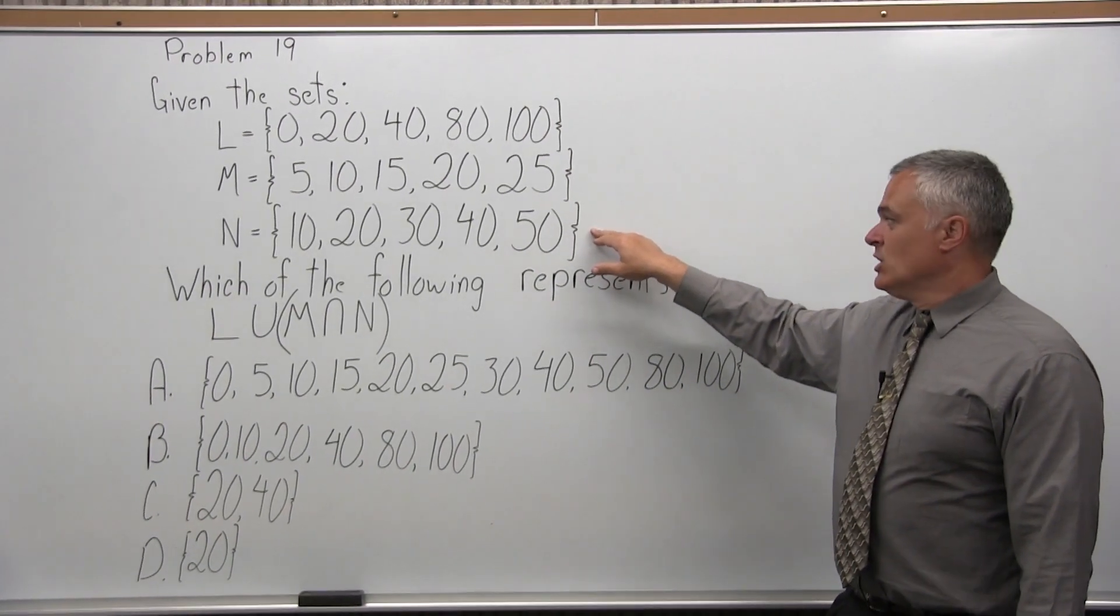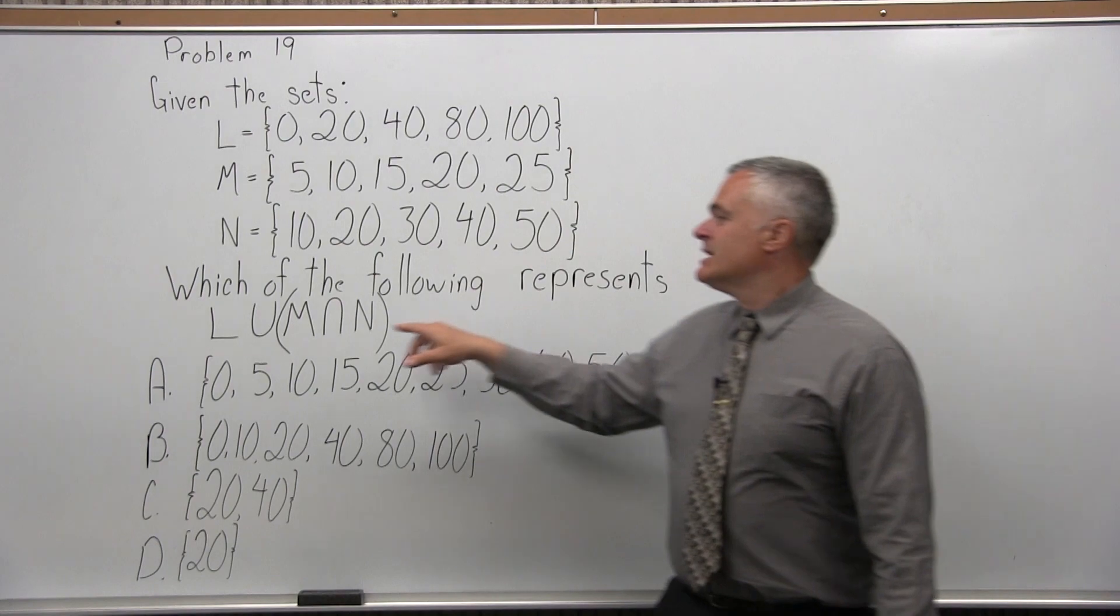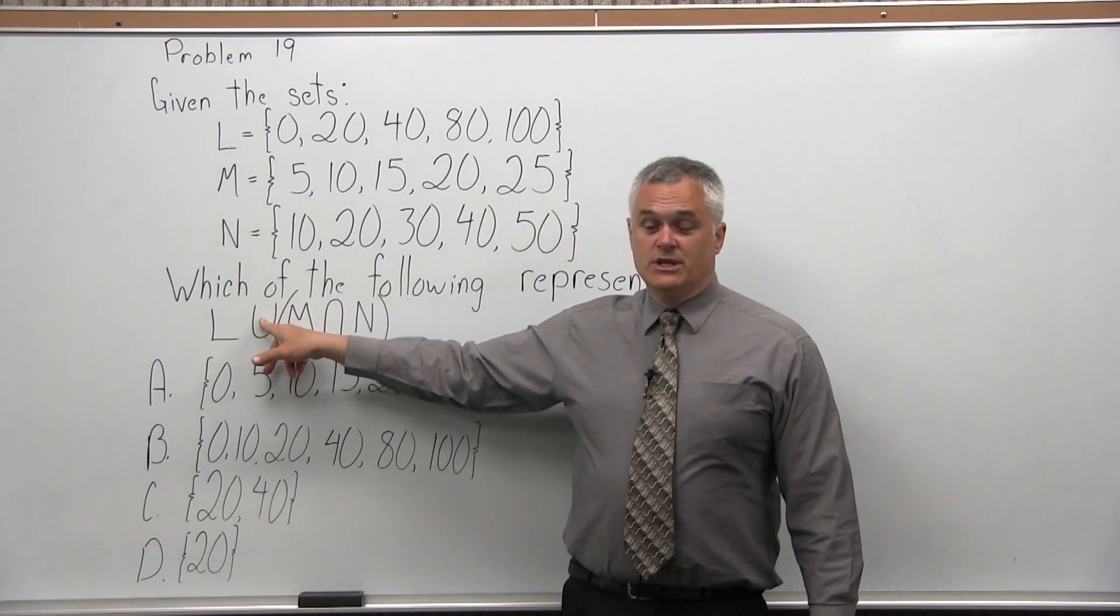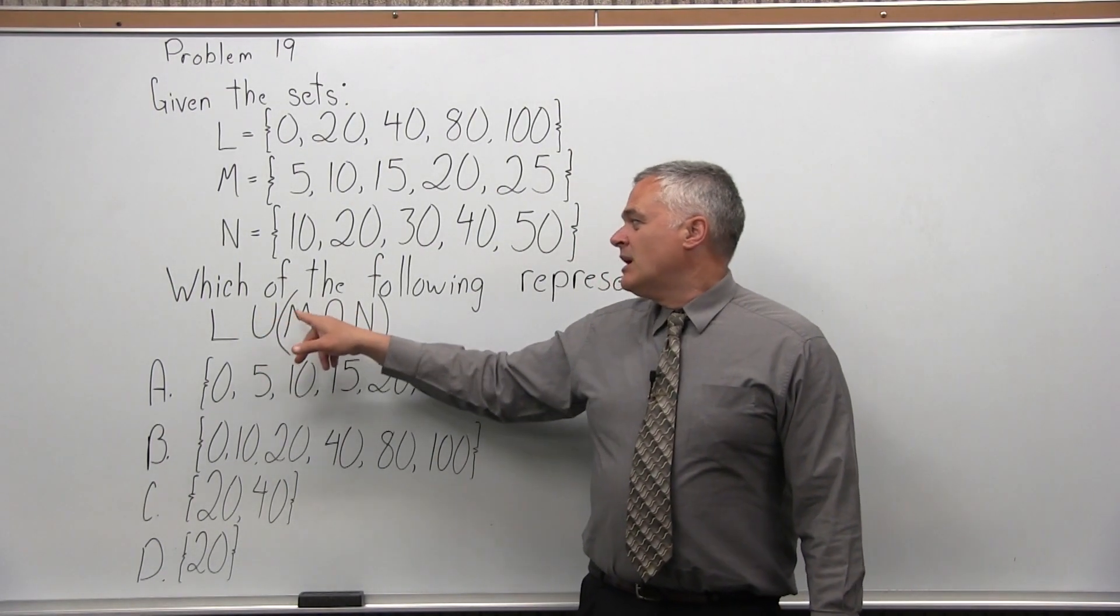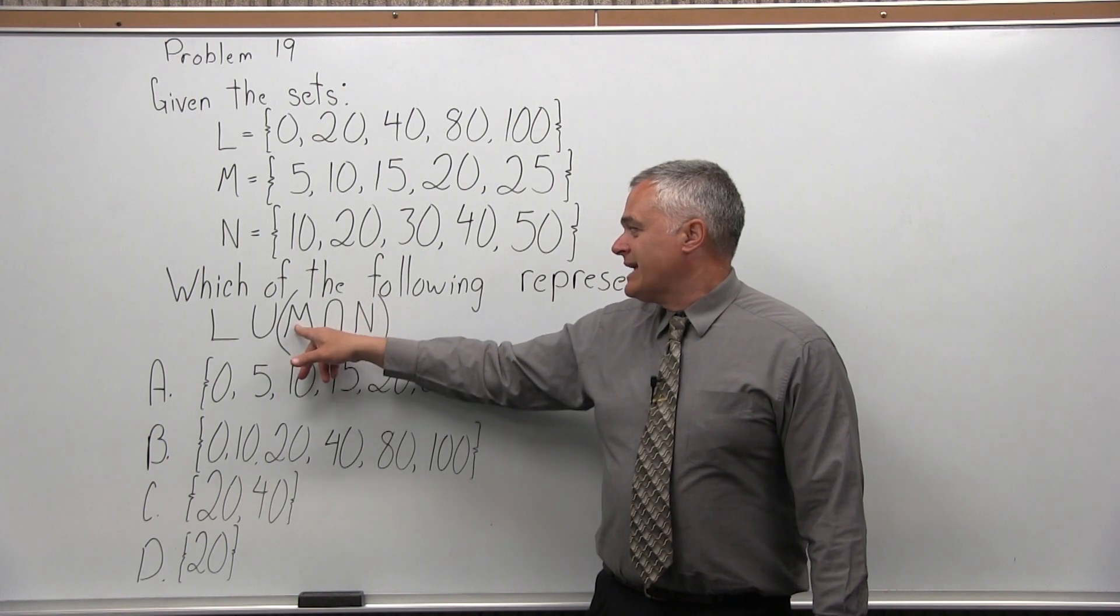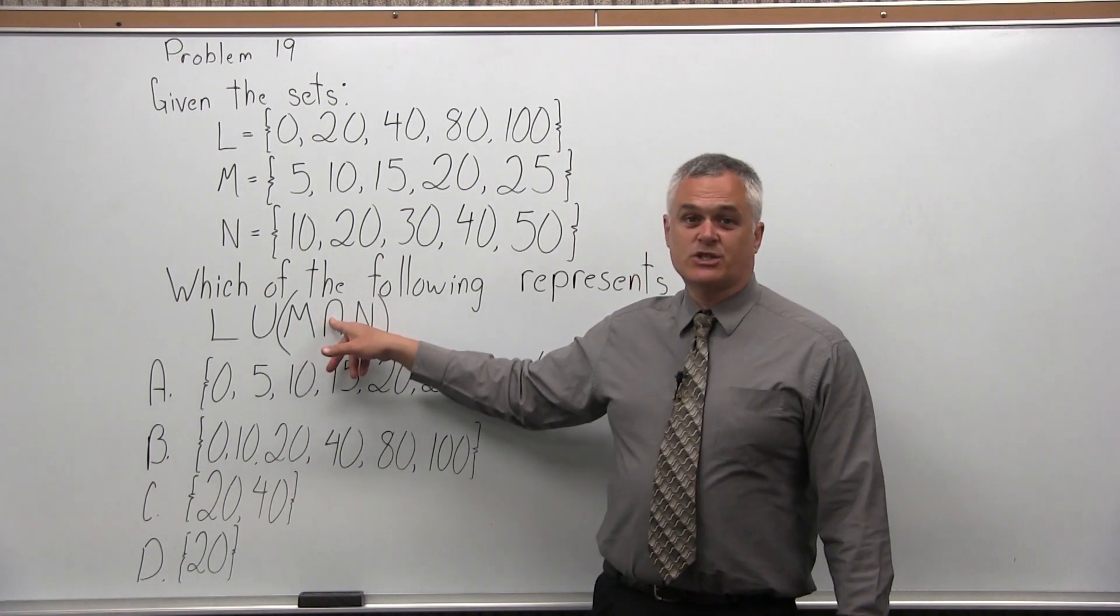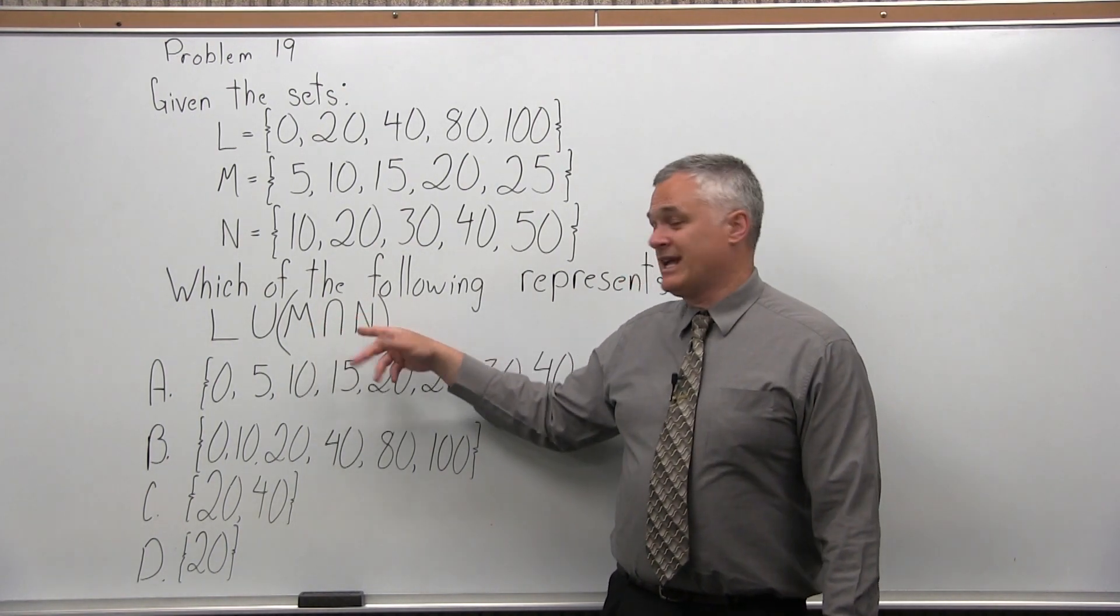And the set N is 10, 20, 30, 40, 50. Which of the following represents L union, this is the symbol for union, of in parentheses M intersection, that's the symbol for intersection, N.